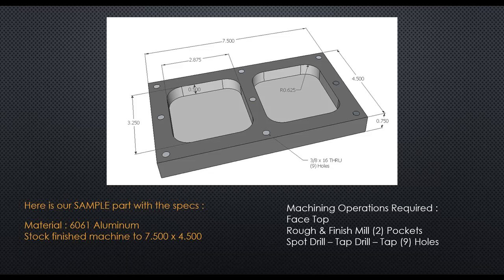Our sample part is made of 6061 aluminum and is pre-machined to the length and width 7.5 by 4.5. In the cycle time estimate, we'll use a Haas machine to face the top, rough and finish mill the two pockets, and then spot drill, tap drill, and tap the nine holes.